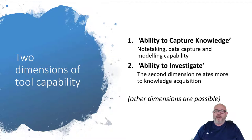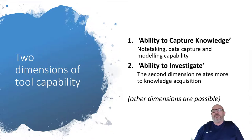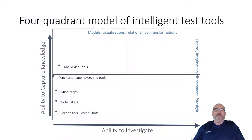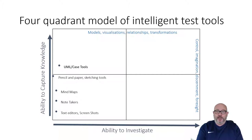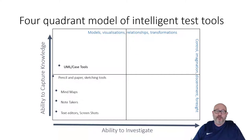I look at tools in two dimensions in terms of their capability: the ability to capture knowledge — that is record keeping — and the ability to investigate. There's a four-quadrant model: the ability to investigate runs along the x-axis, the horizontal, and the ability to capture knowledge on the vertical. We have tools which help us capture knowledge and models, but we do not have tools that are really sophisticated in the ability to investigate — where we can hand over the exploration activity of testing to tools. We can't do that yet. Those tools are very immature, if not non-existent.